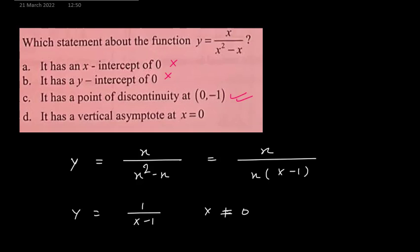It has a vertical asymptote at x equals 0. In the denominator we have x minus 1. This x minus 1 for x equals 1 gives a vertical asymptote. But here it is asked that it has a vertical asymptote at x equals 0, so this is not correct. Only the correct option is option c, it has a point of discontinuity at 0, minus 1.